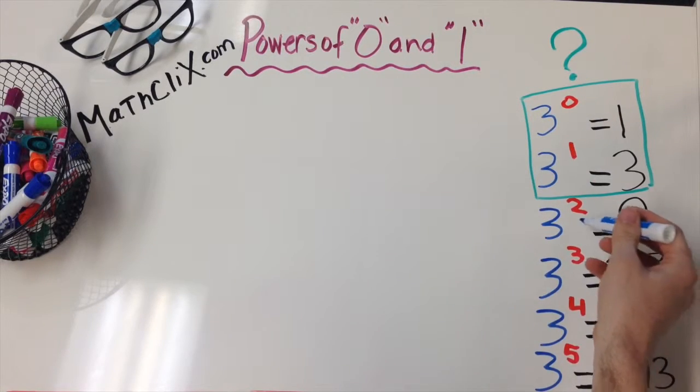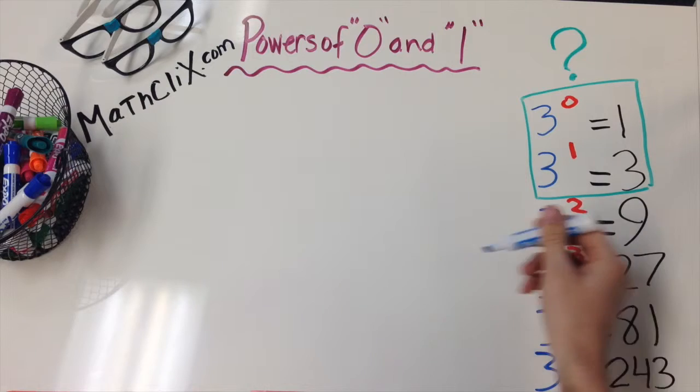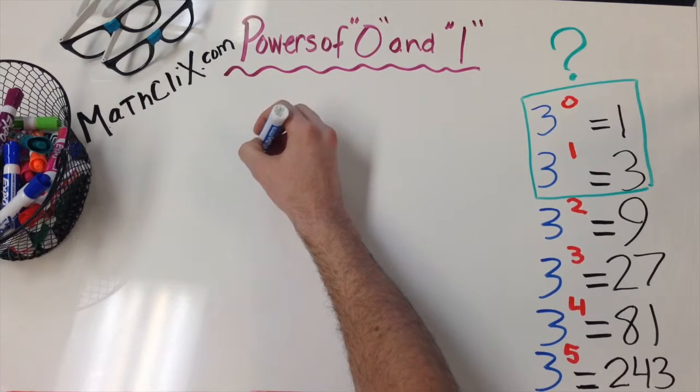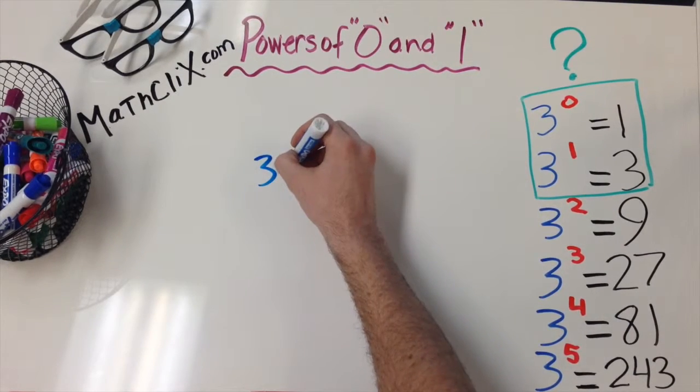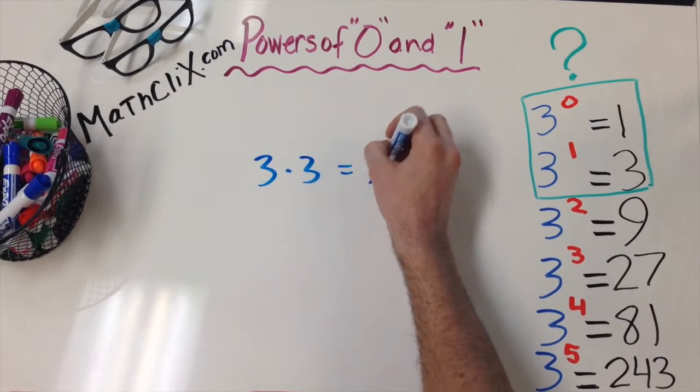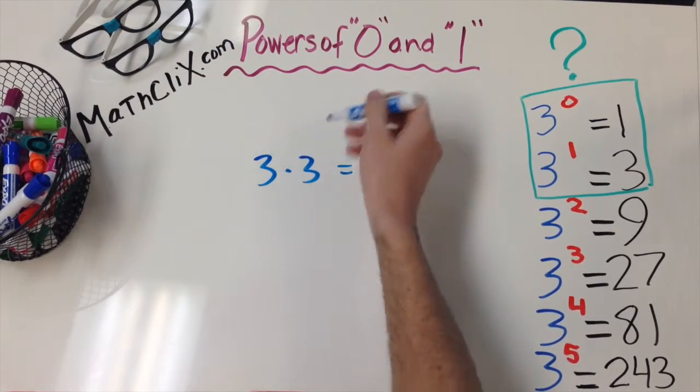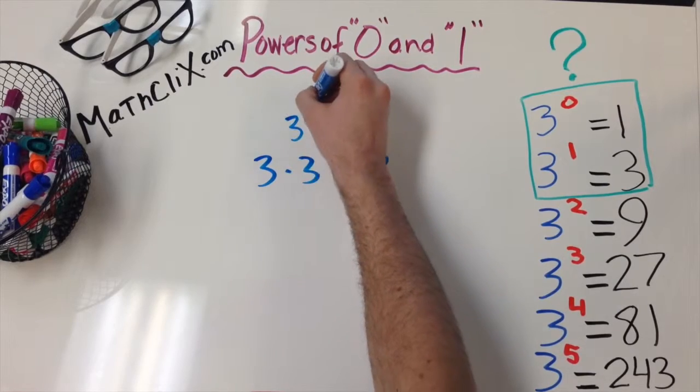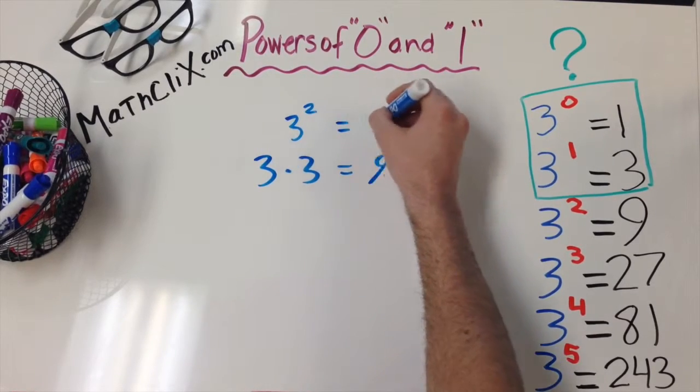Well, we all know 3 squared equals 9, and we were taught that it's 3 times 3 equals 9, and since there's two 3's, we can write that shorthand as 3 squared equals 9.